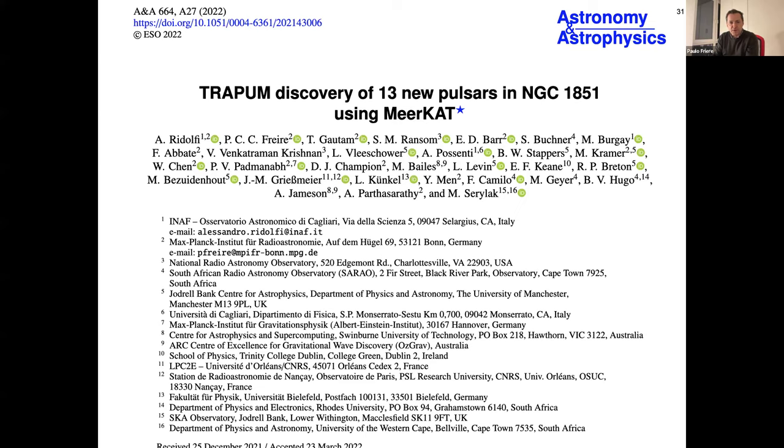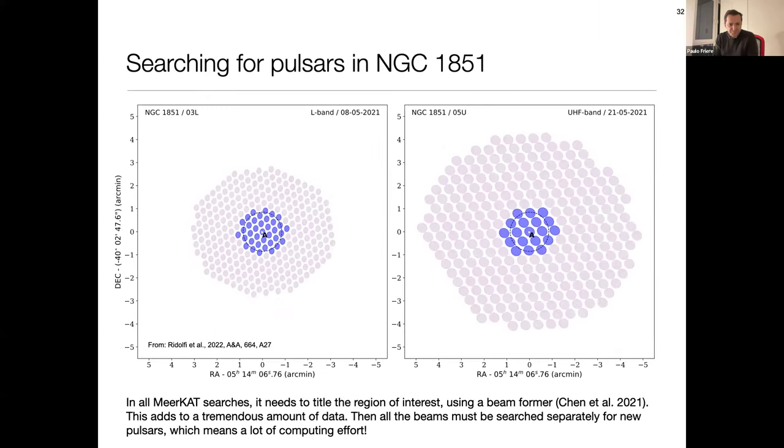This is the problem, of course, of using an array. With the GBT, for instance, we can cover this whole region of interest with a single beam. When you have a beamformer, of course, you need to create many beams to cover the region of interest, which is this circle. So, on the right, we are looking at UHF, lower frequency, the beams are a bit larger. On the left is L-band. So, beams are a bit smaller, so you need to make more of them. This means that we need to store much more data and process a lot more data.